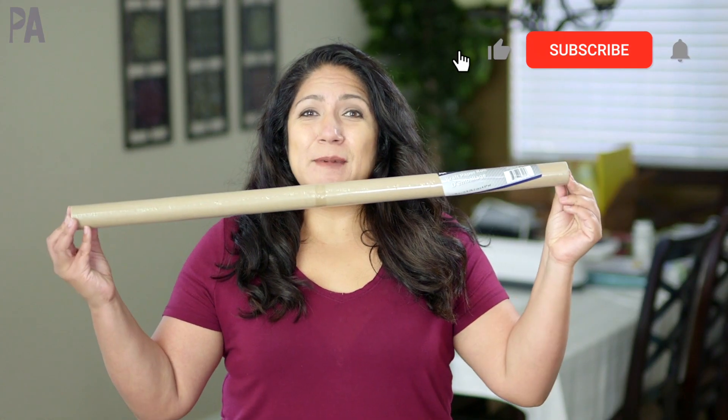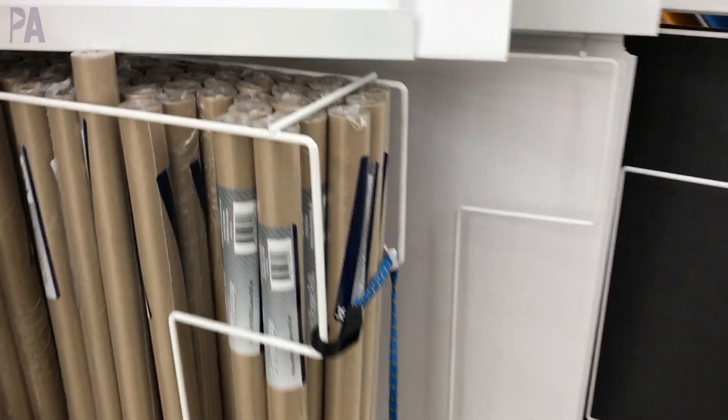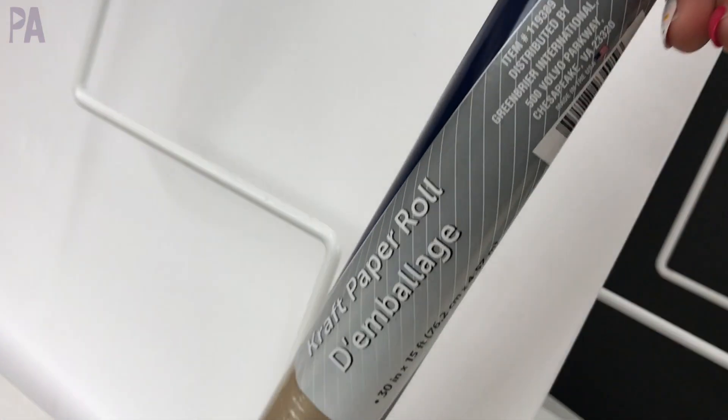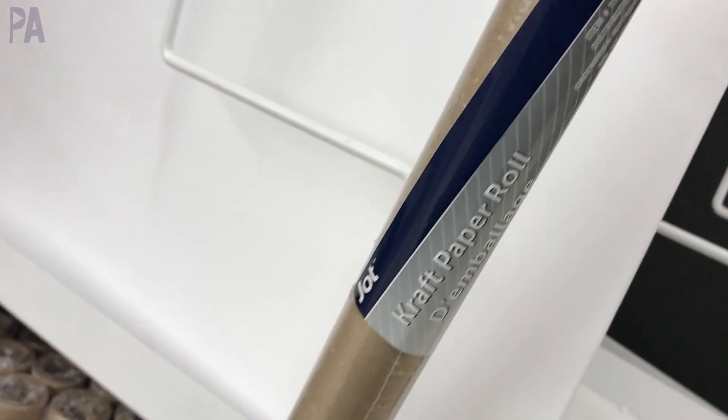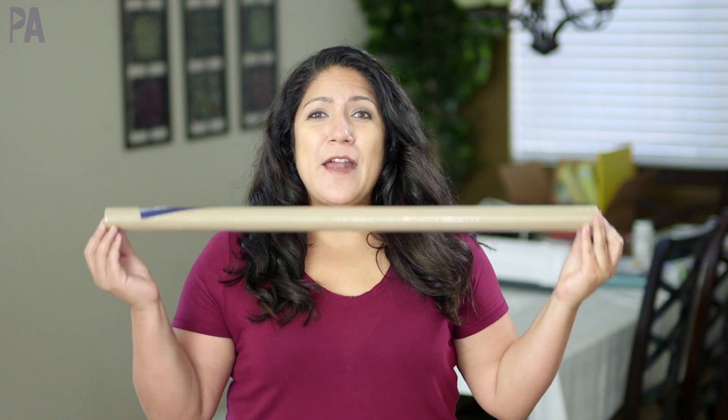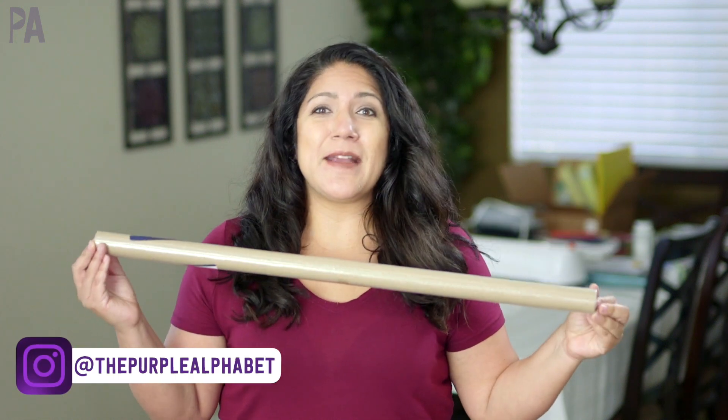This is an item at Dollar Tree. It only costs a dollar. It is the craft paper. I found it over in the learning section where they put all the poster boards, but I've also seen this back in the gift wrap section. So keep an eye out for it. It is a great find. It's called the craft paper roll by Jot and it's 30 inches by 15 feet. So I thought what better tool or supply to make some activities for your kids.